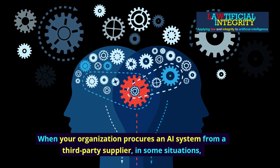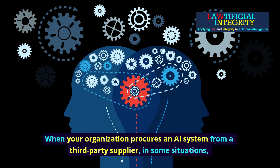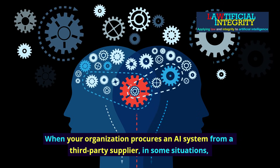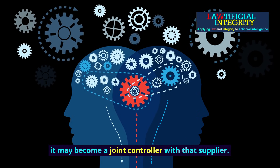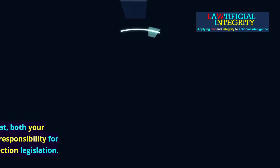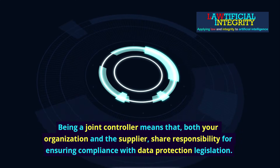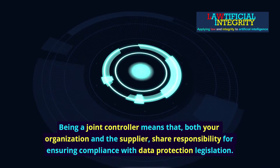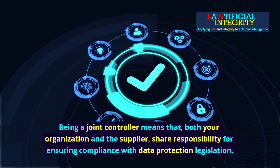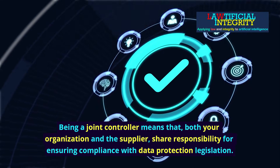When your organization procures an AI system from a third-party supplier, in some situations, it may become a joint controller with that supplier. Being a joint controller means that both your organization and the supplier share responsibility for ensuring compliance with data protection legislation.